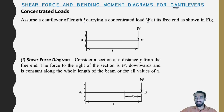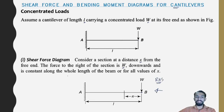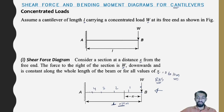For the shear force diagram, consider a section at a distance x from the free end B. The force to the right of the section is W, acting downward, and is constant along the whole length of the beam for all values of x. Whether x is 0, 1, 2, 3, 4, up to the total length of the beam, the shear force remains W.